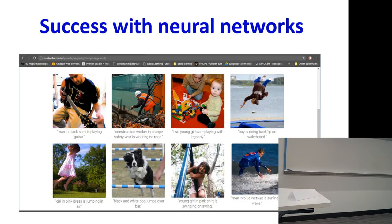Here's another really fancy result with neural networks. These are pictures, and this caption — 'a man in a black shirt playing a guitar' — wasn't written by a human being. That was produced by a computer, produced by a deep neural network.